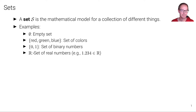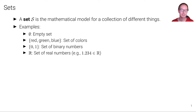We can also have sets that are infinitely large. For example, the set of real numbers contains all possible real numbers, and there are infinitely many of them. We denote this set using R with this special notation here. So for example, the real numbers 1, 2, 3, 4 are elements of that set.